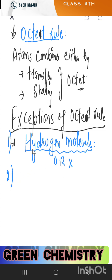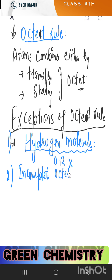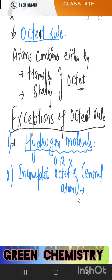Second exception: incomplete octet of the central atom. In some molecules, the central atom's octet is not complete — it remains incomplete. This is the case in several molecules.